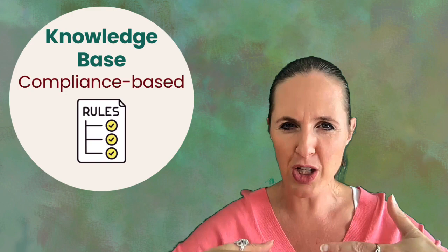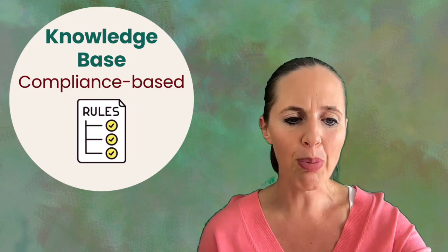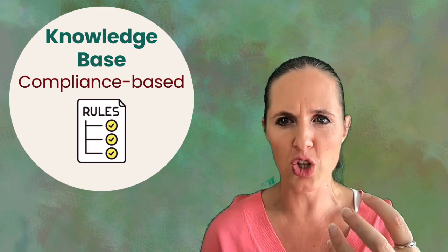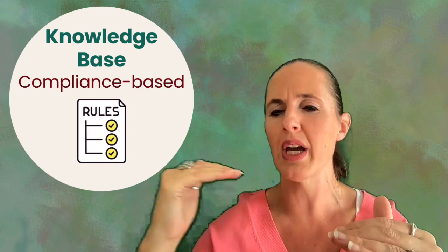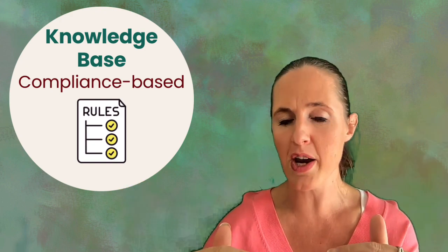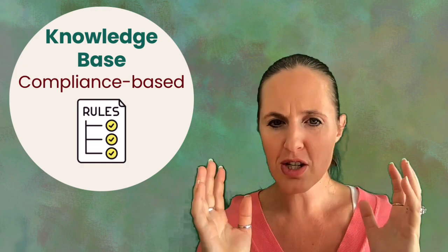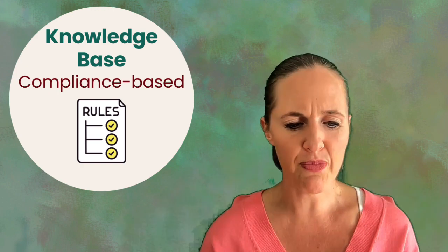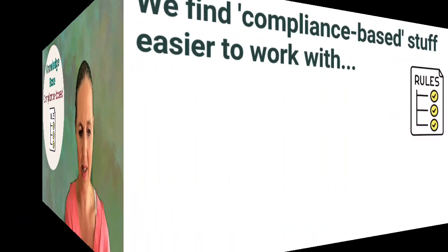And then we get back to a compliance type question where you take the theory, you take the compliance stuff, you take the standards and you go, standard says you should do this, this is what you're actually doing, and so you need to change this. Standard says you should do this, this is what you're actually doing, so you're fine here. That's compliance based tax legislation based stuff, accounting standards. You don't have a choice. That is your theory, that is your compliance based stuff.